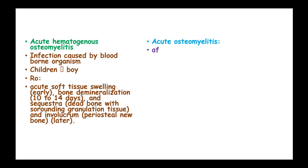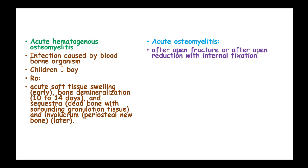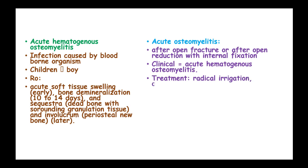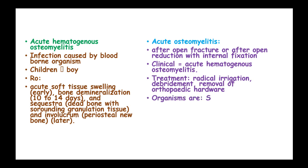Acute osteomyelitis occurs after an open fracture or a fracture reduction with internal fixation, and the clinical features resemble those of acute hematogenous osteomyelitis. Its treatment is by radical irrigation, debridement, and removal of orthopedic hardware.